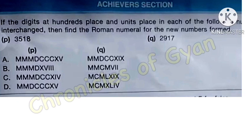The given number is 3518. The question says hundreds place and units place are to be interchanged. So first, let's see: the number is 3518. When hundreds and units place are interchanged, the new number will be 3815.